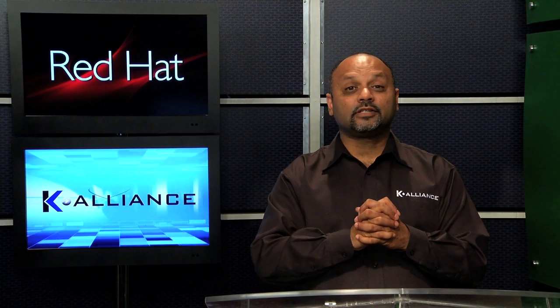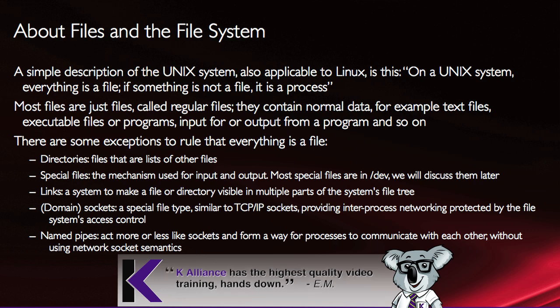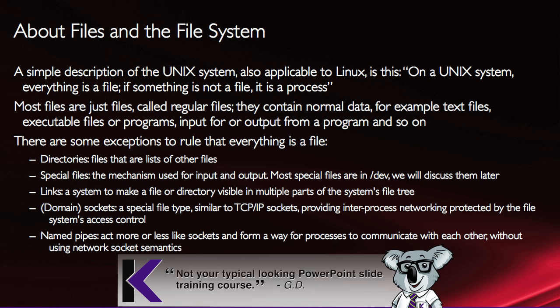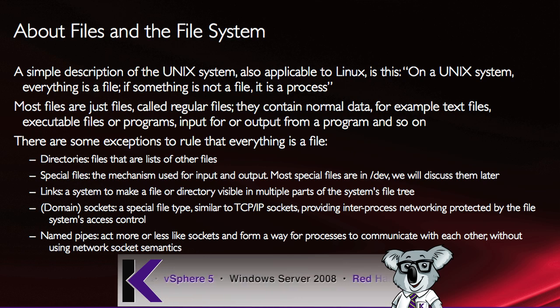This may come as a surprise to you, especially if you're used to other operating systems. But in Linux and Unix, everything is a file. If something is not a file, it is a process. Most files are just regular files — they contain normal data such as text files, executable files and programs, input for and output from a program, and so on.